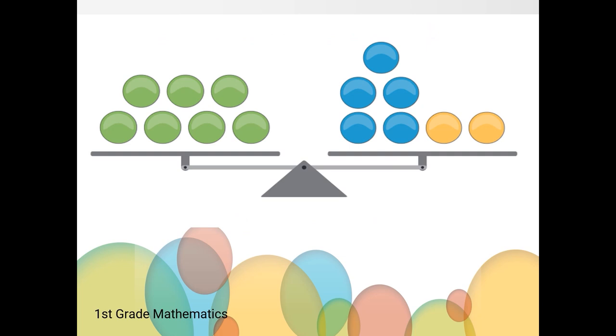What about this scale? What do you notice about this scale? We know that the amount of counters on each side of the scale must be the same since the scale is balanced. We can see that there are green counters on one side and blue and orange counters on the other side. What equation could we write to match this balance scale?